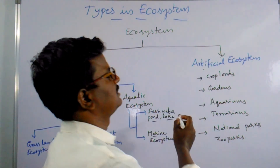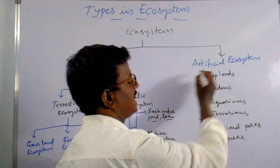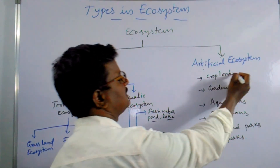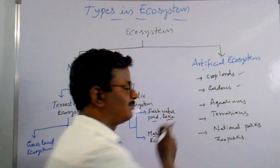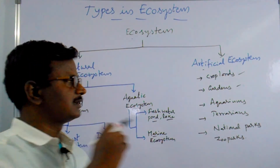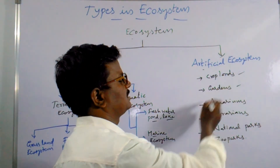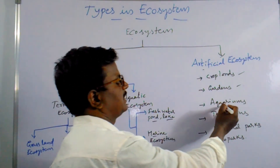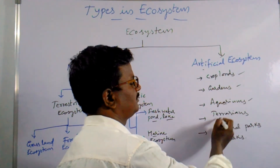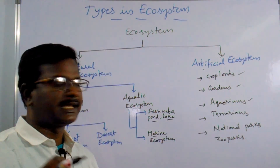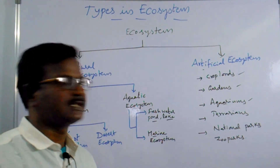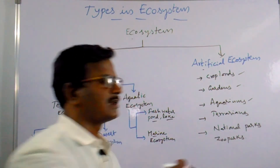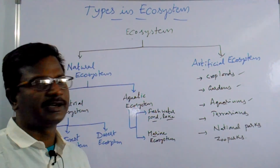Artificial ecosystems are man-made ecosystems, artificially prepared by humans. These include cropland ecosystems (crops grown by farmers), gardens, aquariums (where aquatic animals live), terrariums (where terrestrial animals are kept), national parks, and zoo parks. All these come into the artificial ecosystems.